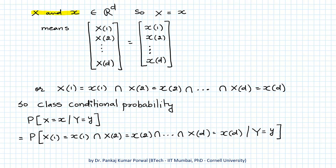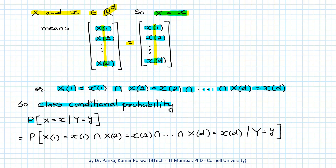Normally X and x belong to a d-dimensional space, so when we say X equals x, we mean the d-dimensional vector X equals the d-dimensional vector x, and these two vectors are equal only when each component is equal. So X equals x is the same as X1=x1 AND X2=x2 AND ... AND Xd=xd. Therefore, the class conditional probability P(X=x | Y=y) becomes equal to this joint probability expression, which is not easy to evaluate.